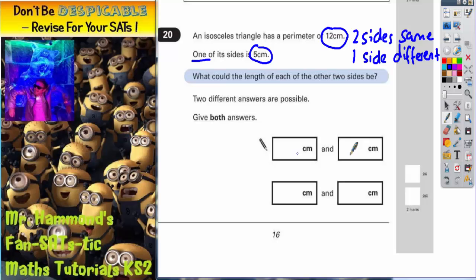If we think about the first possible set of answers and we draw an isosceles triangle where two sides are the same, these two sides are the same and the third side is different. It could be that the 5 we are told about is the sides that are the same. So if 5 is this side, it could also be that one of the other two sides is also 5, because two sides have got to be the same in an isosceles triangle.